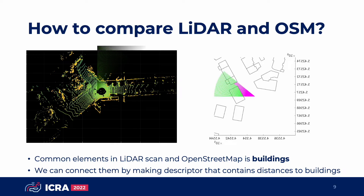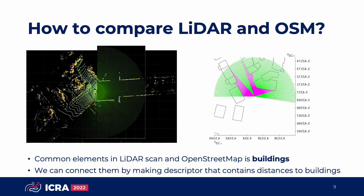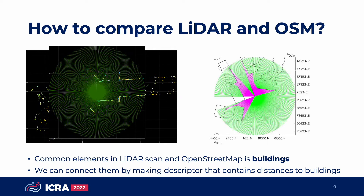To localize a vehicle on OpenStreetMap, we need to find a connection between OpenStreetMap and LiDAR scans. The common elements for both of them are buildings. Therefore, we made a descriptor by calculating distances to the buildings on both LiDAR scans and OpenStreetMap.